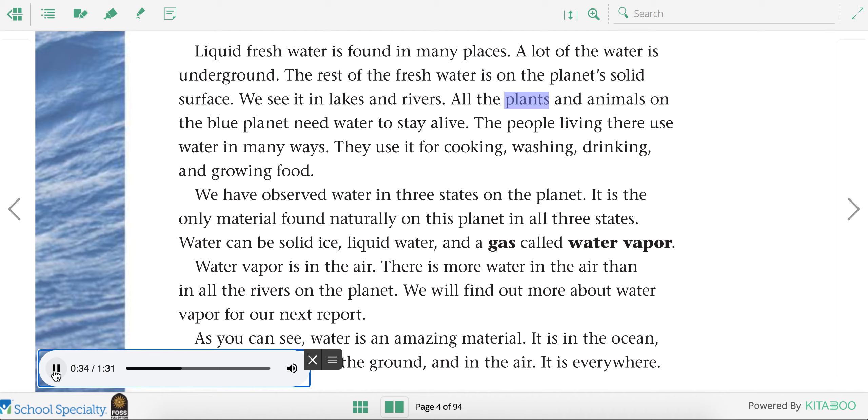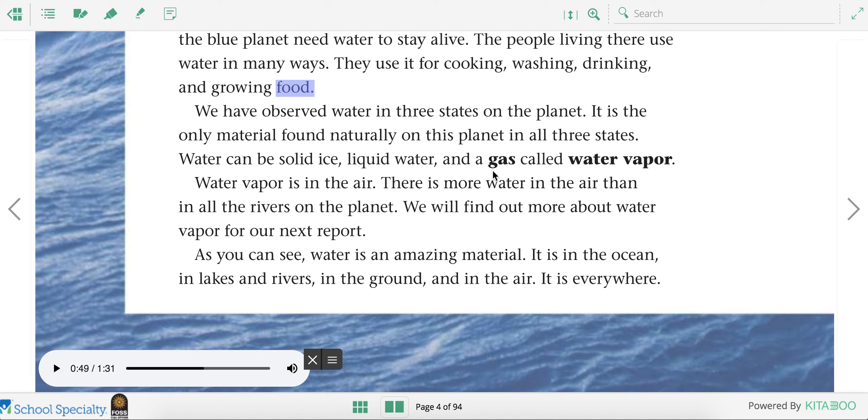All the plants and animals on the blue planet need water to stay alive. The people living there use water in many ways. They use it for cooking, washing, drinking, and growing food. Do you think water is important for us people that live on Earth? What do we use water for?